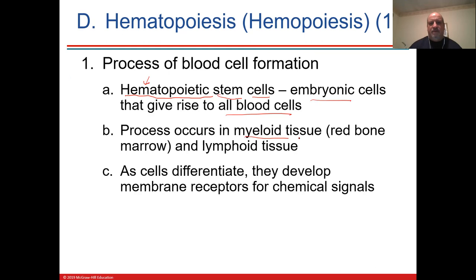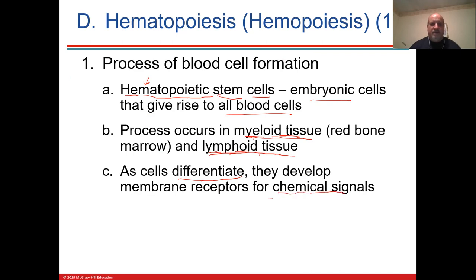Myeloid tissue is the bone marrow. Lymphoid tissue produces different cells, but it's still in the bone marrow. The cells differentiate as they mature, and they develop receptors for chemical signals — especially white blood cells. Following COVID, we know that an antigen binds to white blood cells and can pretty much take over, which is not good.